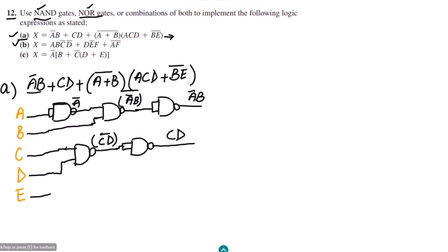Next, we have (A+B) whole complement, which is clearly the NOR gate. So I'll use a two-input NOR gate with A and B as inputs. The output directly gives us (A+B) whole complement.